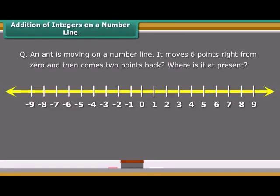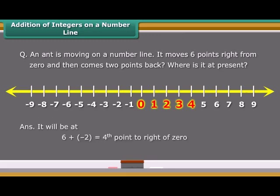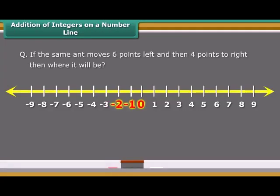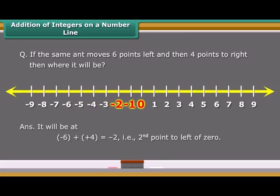An ant is moving on a number line. It moves six points right from 0 and then comes two points back. Where is it at present? It will be at 6 plus minus 2, equal to the fourth point to the right of 0. If the same ant moves six points left and then four points to the right, then where will it be? It will be at minus 6 plus 4, equals minus 2. That is, the second point to the left of 0.